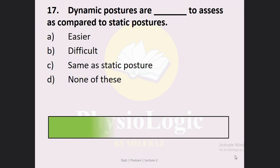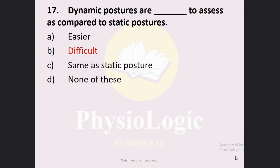Next MCQ: The dynamic postures are dash to assess as compared to the static postures. Option A — easier. Option B — difficult. Option C — same as static posture. Option D — none of these. The correct option is Option B: difficult. The dynamic postures are difficult to assess when compared to static postures, as there is continuous movement of different body parts.